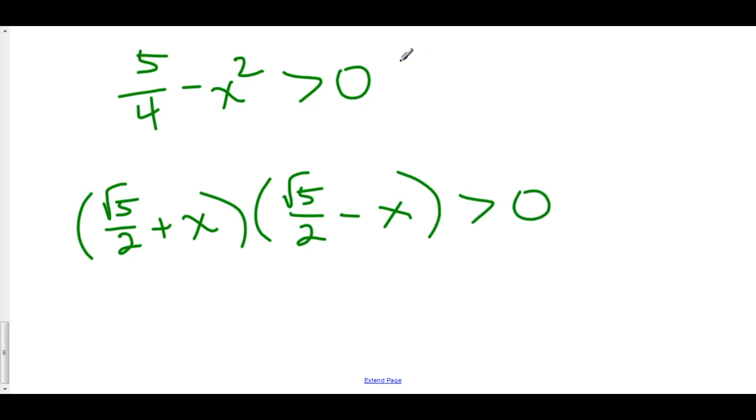We can now do a line analysis to determine when our function will be greater than 0. So here we have x equals negative root 5 over 2 as a 0. And positive root 5 over 2 as a 0. And now we can check in the intervals to see when 5 over 4 minus x squared is going to be positive and when it's going to be negative.